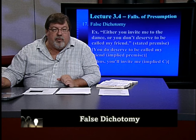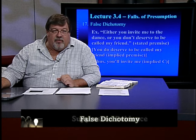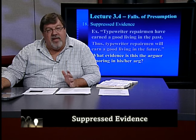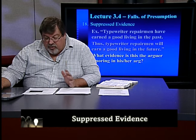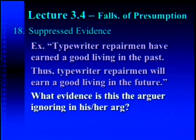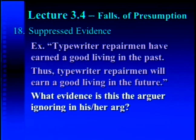Let's talk about suppressed evidence — the 18th example. An arguer ignores important evidence that requires a different conclusion. Here's the example: 'Typewriter repairmen have earned a good living in the past. Therefore, typewriter repairmen will earn a good living in the future.' What evidence is being suppressed? The arguer ignores the fact that computers have almost completely replaced typewriters in recent years.